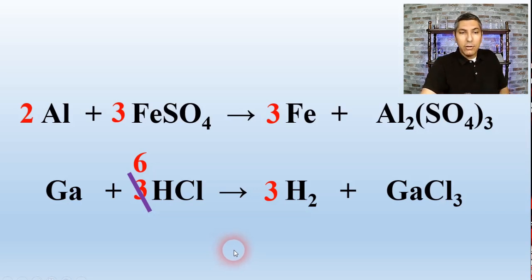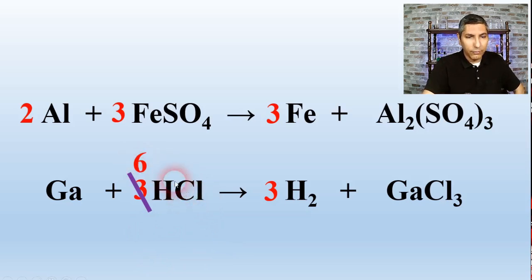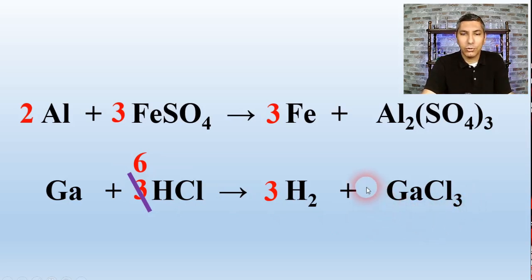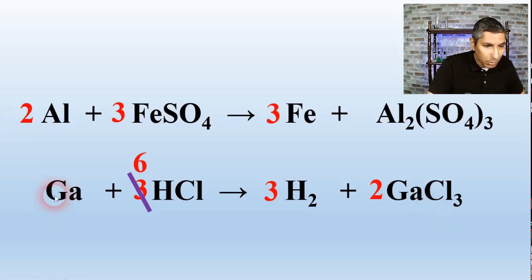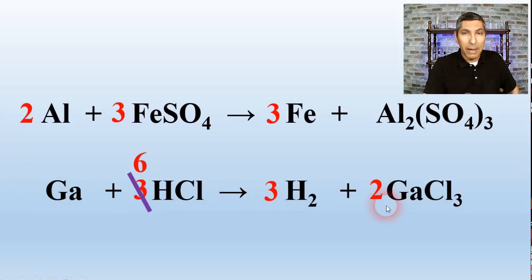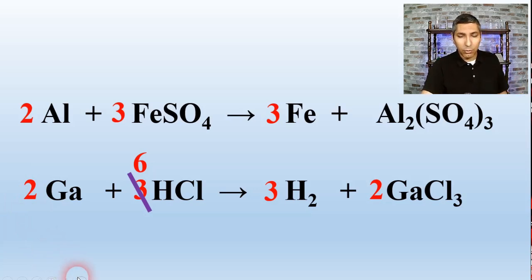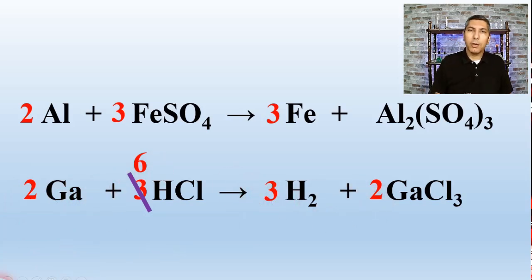The hydrogens are balanced, but by doing that we've messed up the chlorines — now we have 6 on the left and 3 on the right. So I multiply the GaCl3 on the right by 2 to rebalance the chlorines. Finally, I see one gallium on the left and two on the right, so I multiply the gallium on the left by 2. Now we have a fully balanced equation with coefficients 2, 6, 3, and 2 — a good example of having to jump back and forth and balance an element more than once.